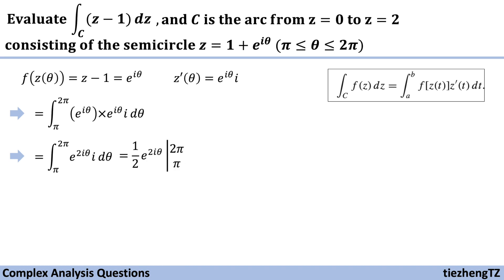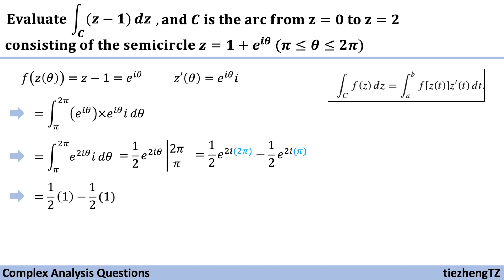The anti-derivative is one half times e to the power of 2i theta, evaluated from pi to 2 pi. We substitute using 2 pi and pi individually. We know e to the power of 4 pi i equals 1, and e to the power of 2 pi i equals 1. So our equation becomes 1 over 2 times i minus 1 over 2 times i, which equals 0.